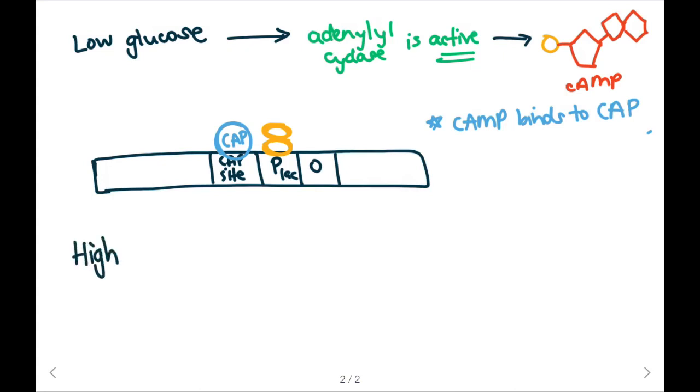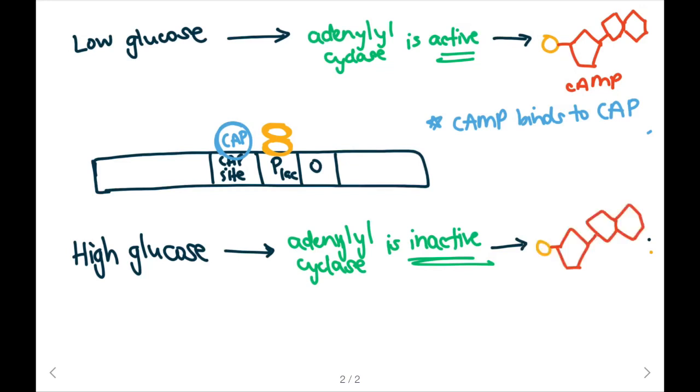When we have high glucose levels, then adenylyl cyclase will be inactive. So cAMP will be produced in very low quantities. Here we have our cAMP molecule and there will be low cAMP concentration in the cell.